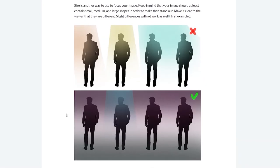Lighting is another technique. In the first image I added light to the left character, then to the second character, and made the last two share the same light — creating a kind of symmetry between them. In the next example, I added light to only one person with shadows behind, isolating them. You can use light to guide your viewer to a specific point in the image.